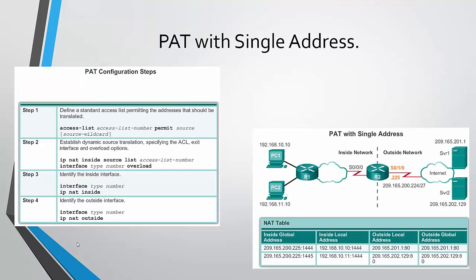That was for multiple addresses. For a single address, the steps are fewer. We define a standard access list, then establish the dynamic source translation by specifying which access list to use, which is the exit interface, and the overload option. Finally, we mark the interfaces as inside and outside. Once configured with single address PAT, only one inside global address acts as the public address, but port numbers will change thanks to the overload command.